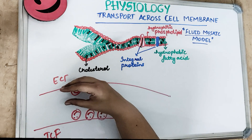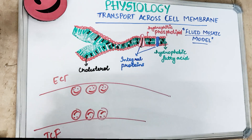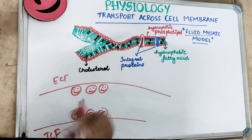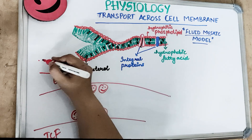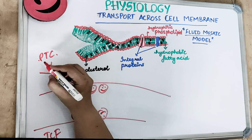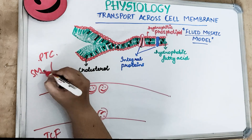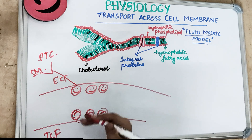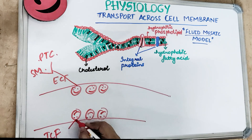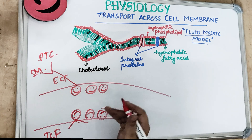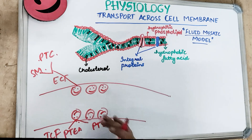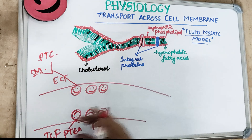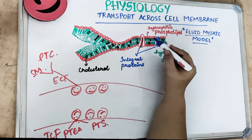The phospholipid layer for the external surface is different from the internal. The external phospholipids are of two types: phosphatidylcholine and sphingomyelin. The phospholipids towards the ICF, the inner surface, are phosphatidylethanolamine and phosphatidylserine.